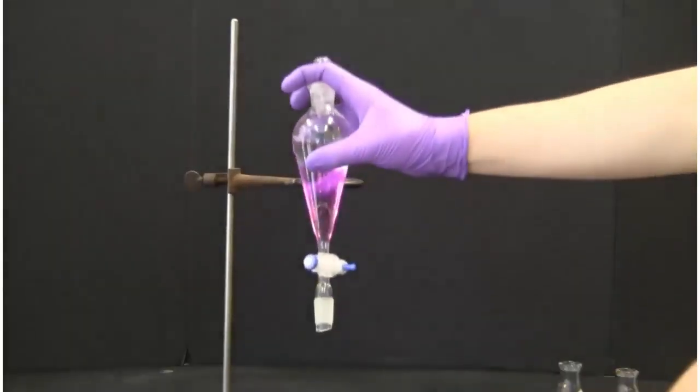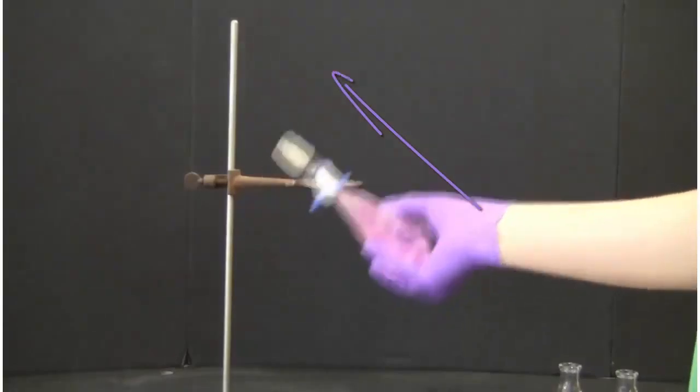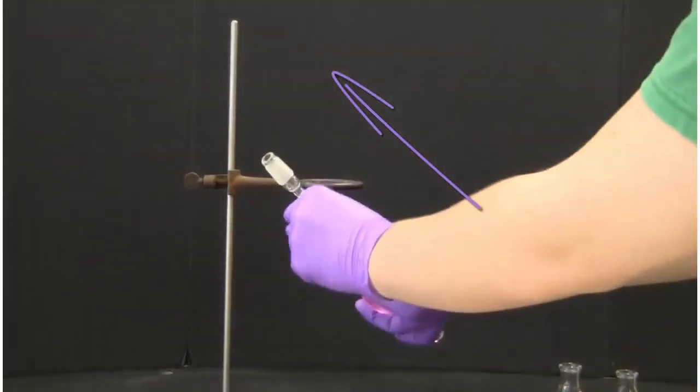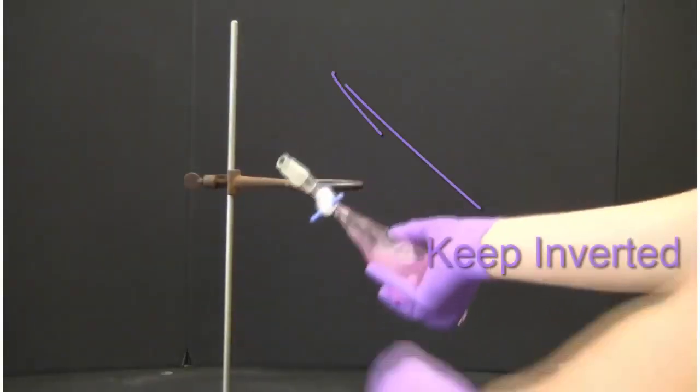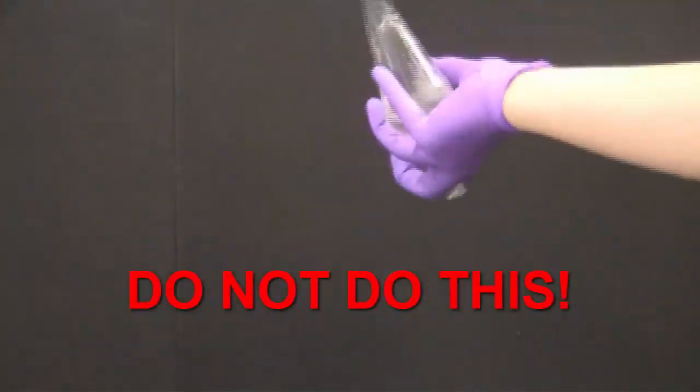Once the stopper is securely on, the funnel is manually shaken. Remember the funnel must be shaken pointing away from the body and away from your lab partners. Proper shaking technique involves keeping the funnel inverted. Do not flip the funnel while mixing as this may lead to leaks.